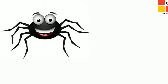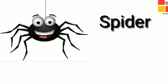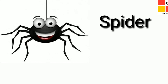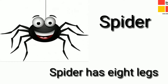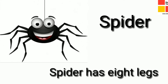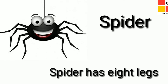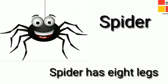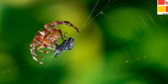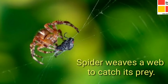Our next insect is spider. Spider is an insect that has eight legs. Already we have studied that insects have six legs, but spider is an exception and it has eight legs. Children, have you seen a spider weaving a web? A spider weaves a web to catch its prey or to get its food.